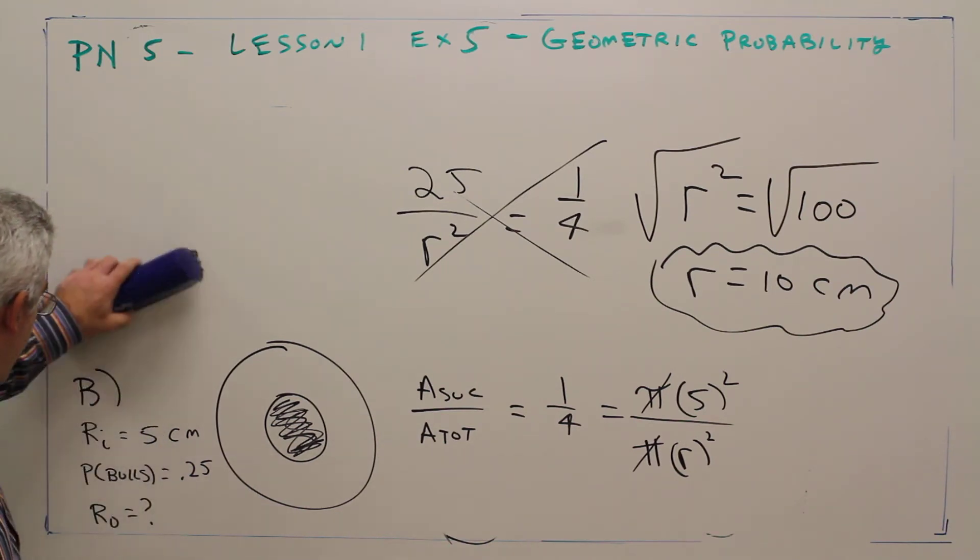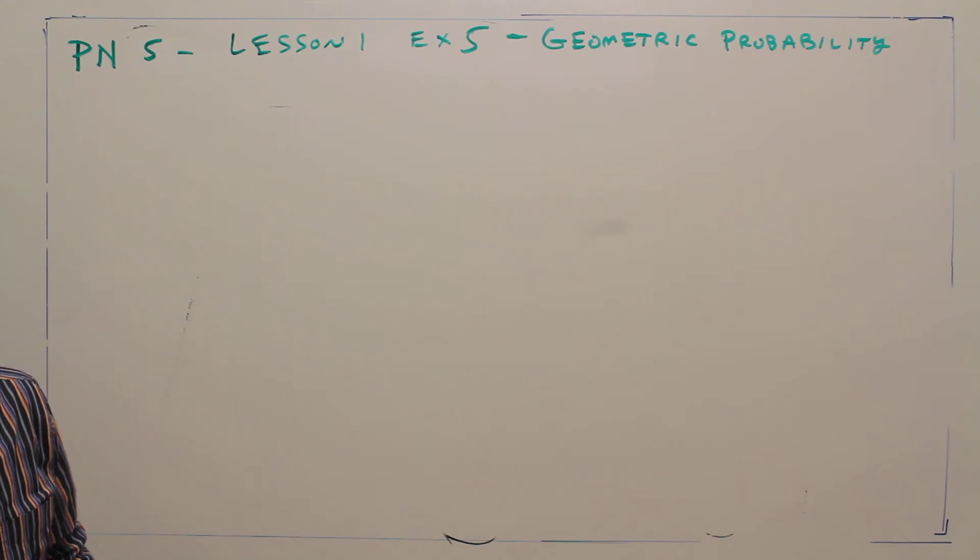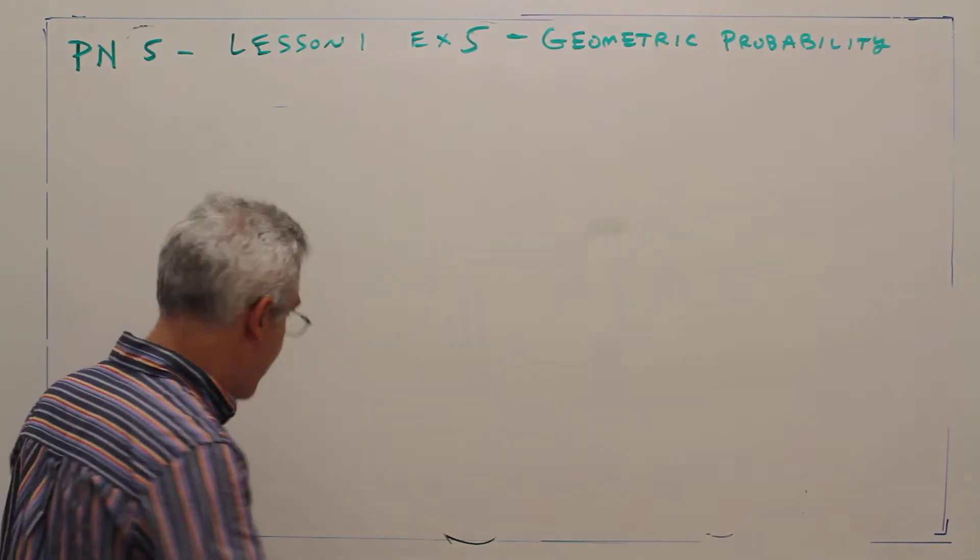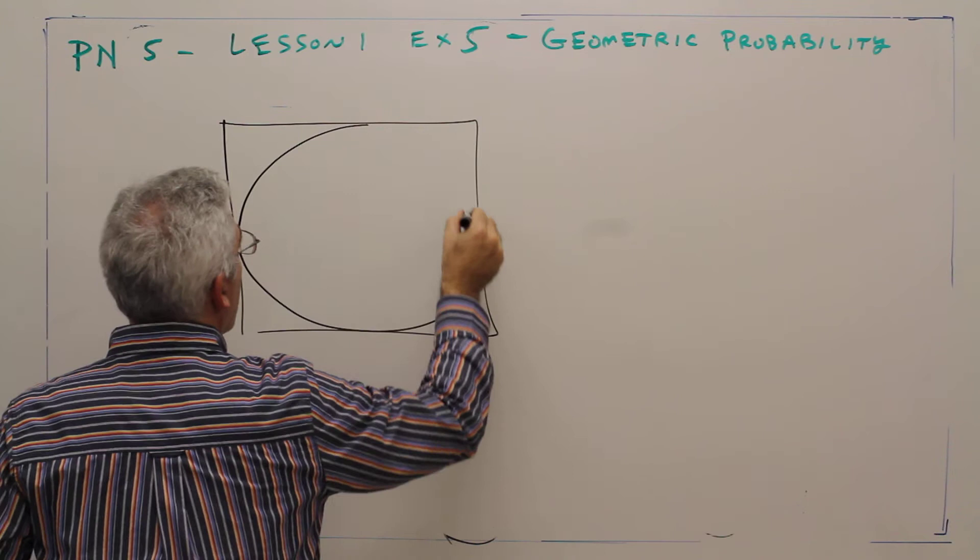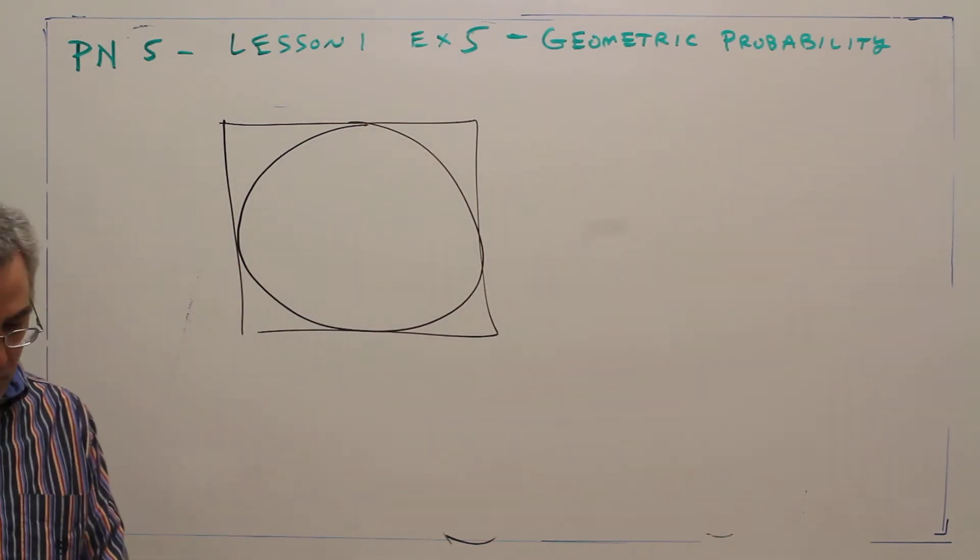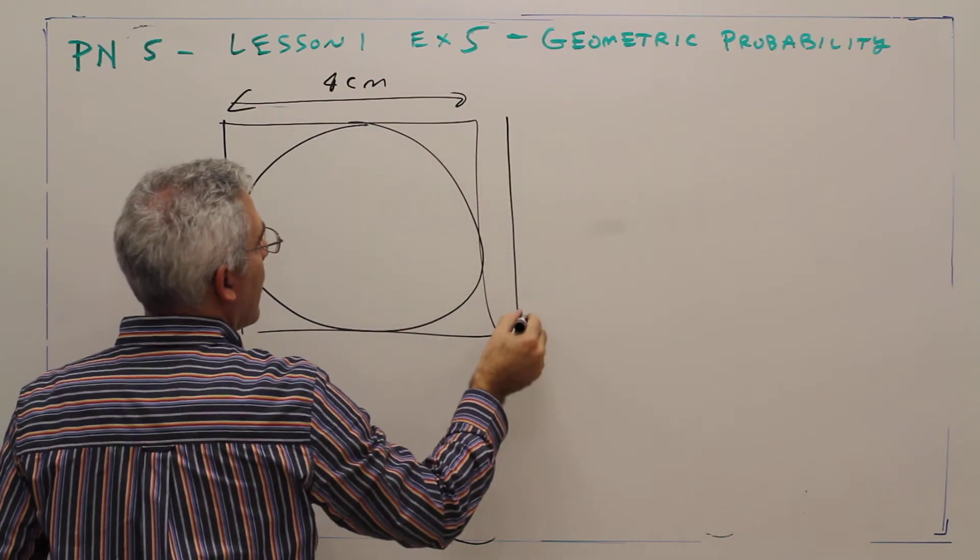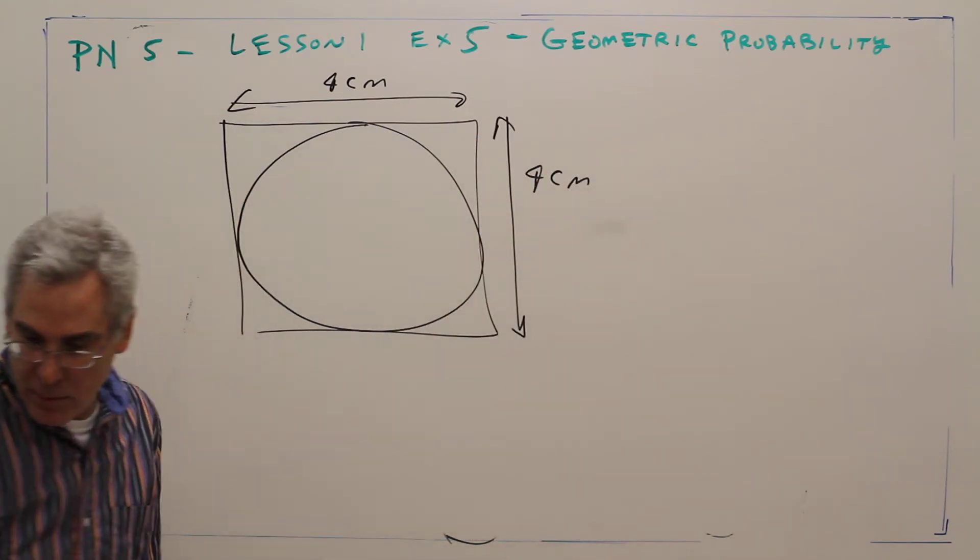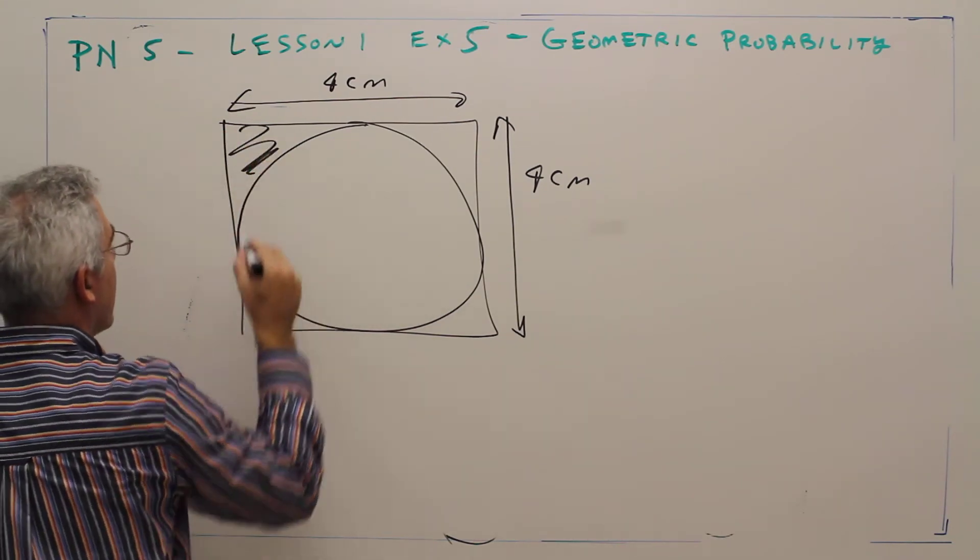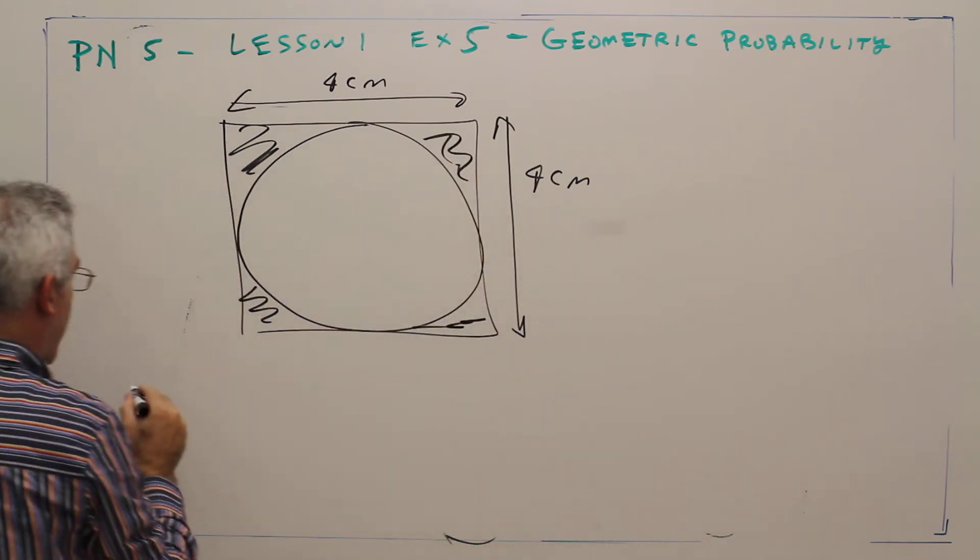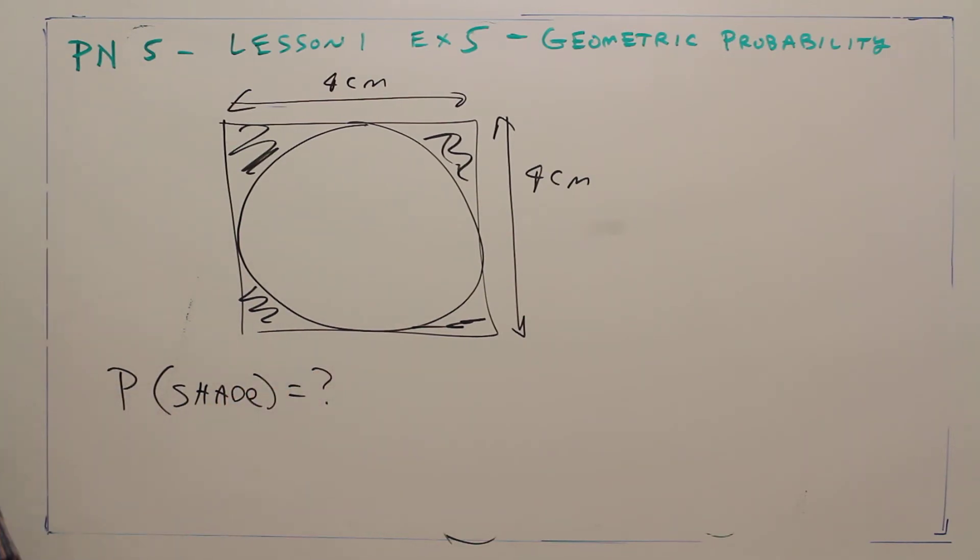And then finally, the third problem. I didn't have room—I'll put it up now. The third problem said a circle is inscribed inside of a square. The square has sides of four centimeters. A dart is randomly thrown at the square target. What's the probability of hitting the shaded area?